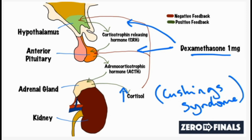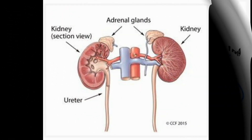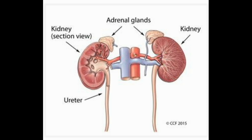Some benign or malignant tumors that arise outside the pituitary gland can produce ACTH — a condition known as ectopic ACTH syndrome. Lung tumors, malignant adenomas, or carcinoids cause more than 50 percent of these cases. Other less common types of tumors that can produce ACTH include thymomas, pancreatic islet cell tumors, and medullary carcinomas of the thyroid.